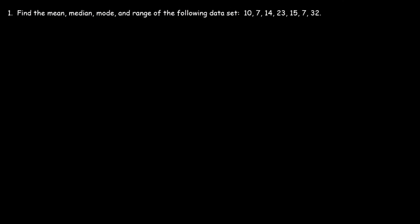Let's start with this problem: find the mean, median, mode, and range of the following data set. The first thing I would recommend doing is arranging the numbers in increasing order. So the lowest number is 7, and we have two of them. After that, the next number is 10, and then 14, 15.